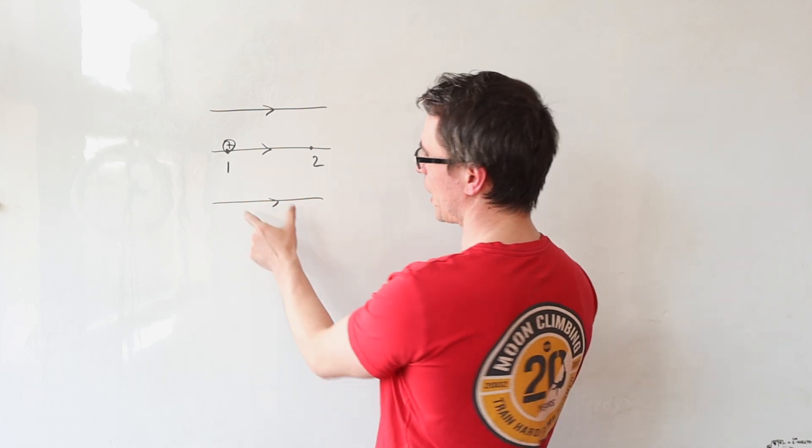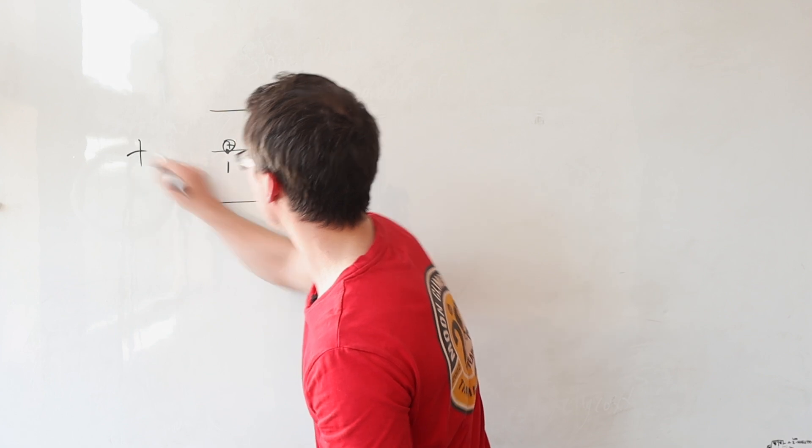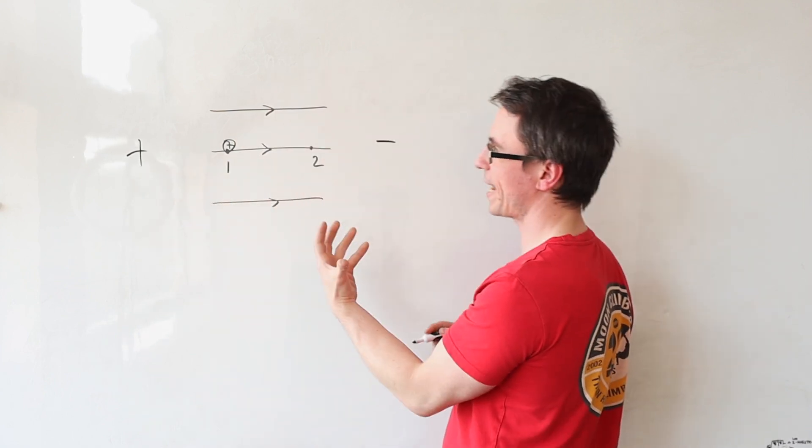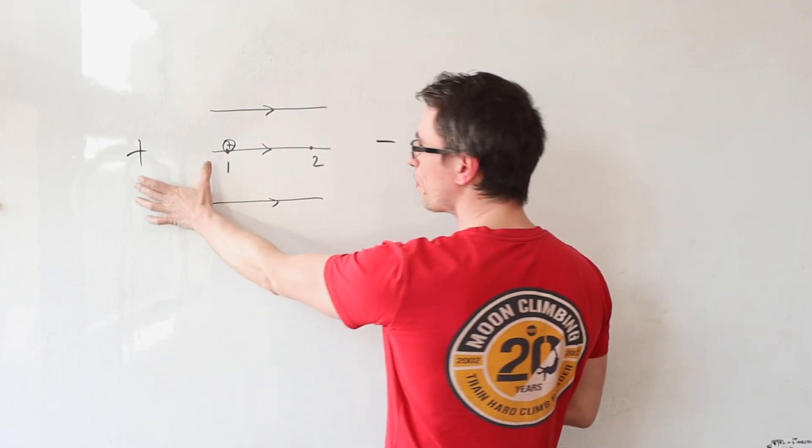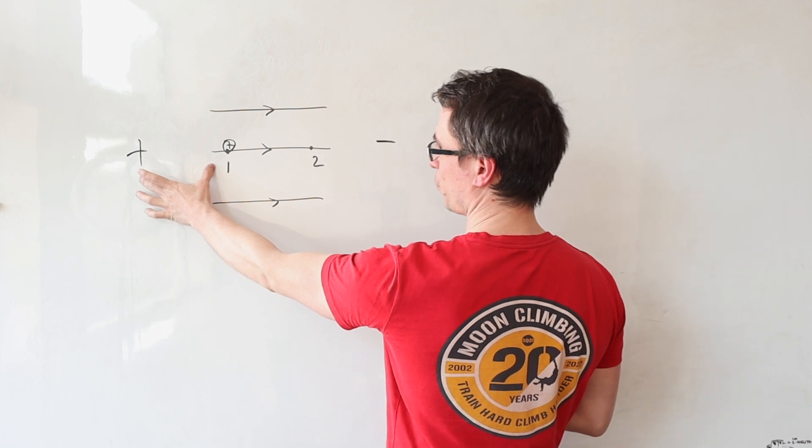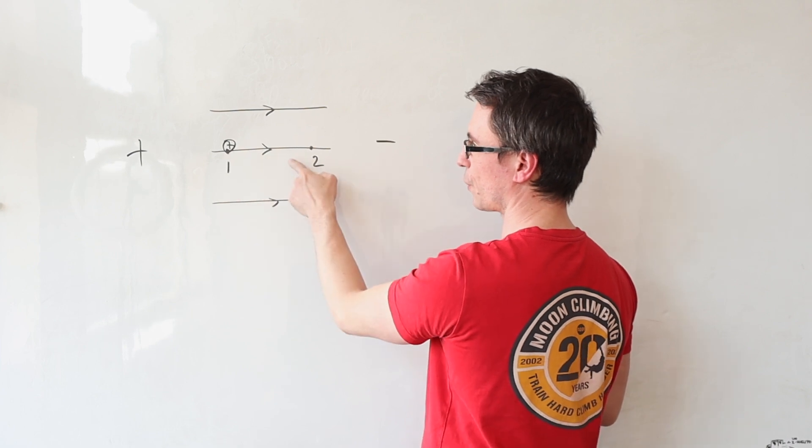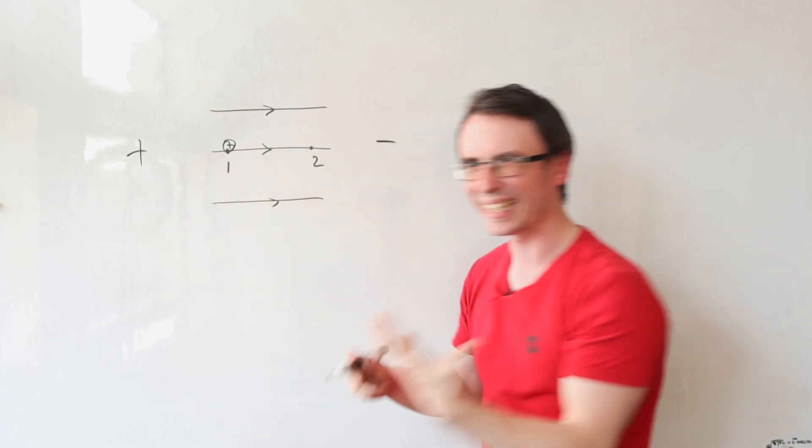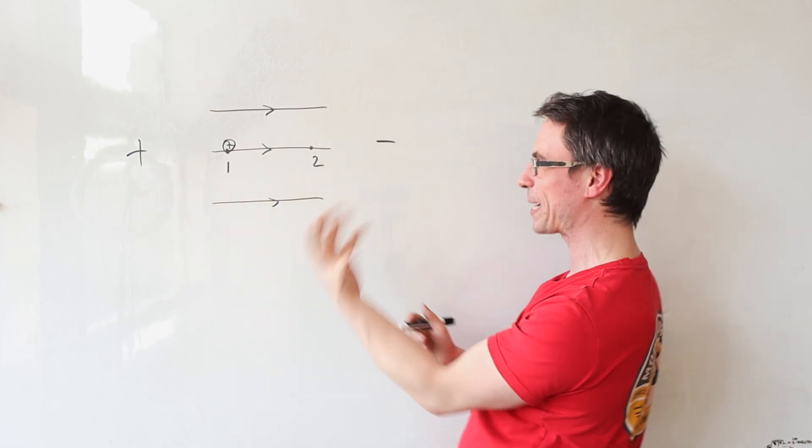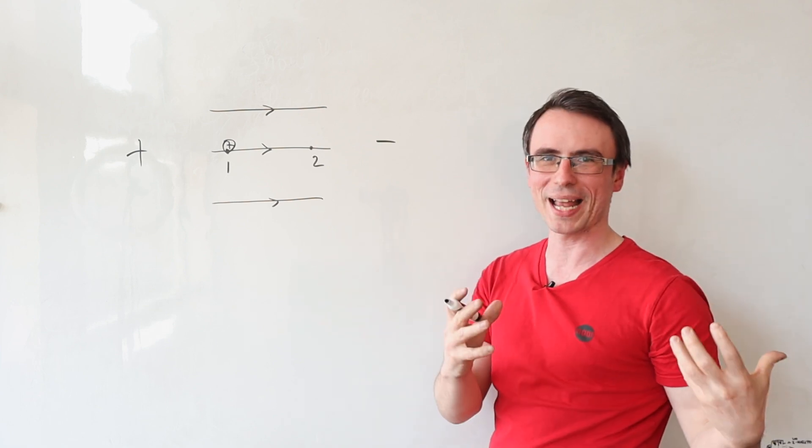Electric field lines flow from positive to negative so two positive charges will repel, meaning that the further this charge is from the positive one, the less capacity it has to pick up speed from repelling.